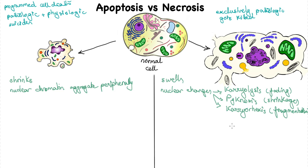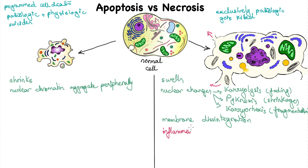Another major morphological and functional difference is that in necrosis, we have membrane disintegration, which leads to both internal organelles having their content leak out into the cytosol, as well as the cytoplasmic contents leaking out of the cell. The leakage of cytoplasmic contents into the extracellular space in necrosis provokes an inflammatory response.